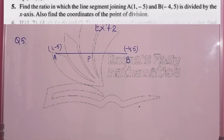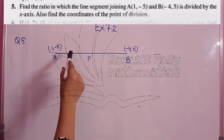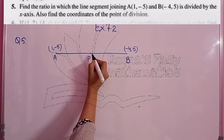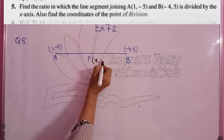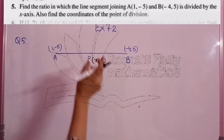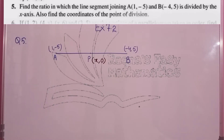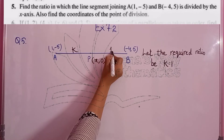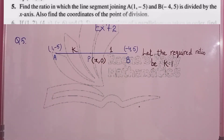Question 5: find the ratio in which the line segment joining (1, -5) and (-4, 5) is divided on the x-axis, and find the coordinates of the point of division. When a point is on the x-axis, its y-coordinate is 0. So we let the required ratio be k:1 and use that y = 0 to find k.